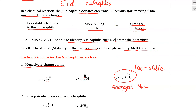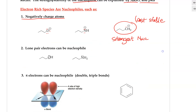This goes back to the key relationship: the less stable the nucleophile or the nucleophilic site — whether it is an atom or a site — the more reactive it will be. So when identifying sites of nucleophile, we need to be looking for atoms that carry a negative charge.